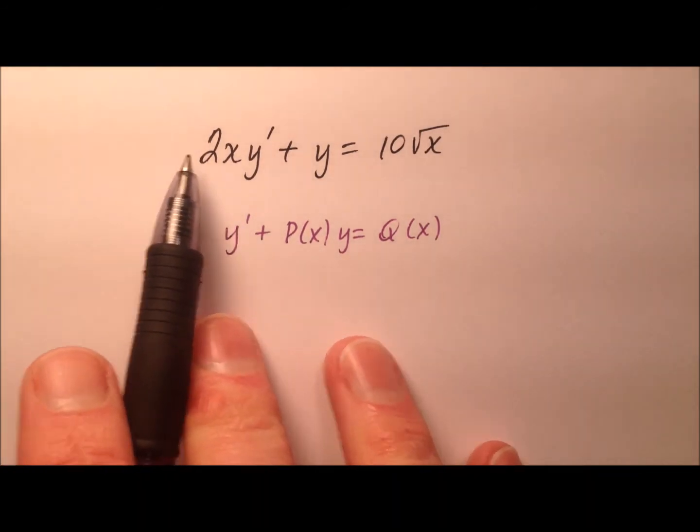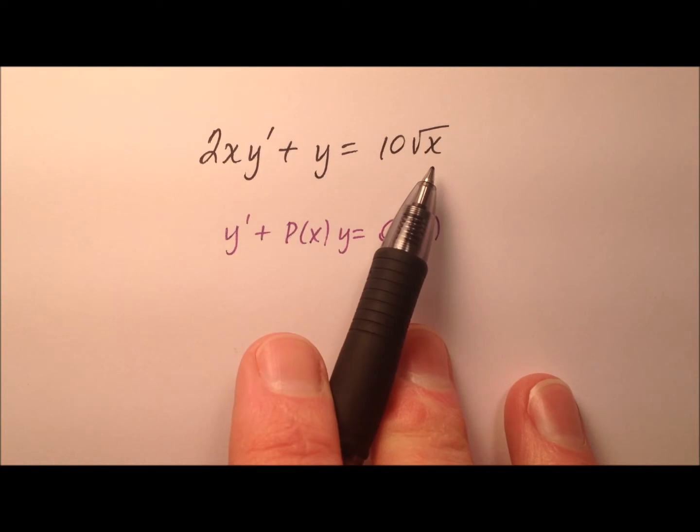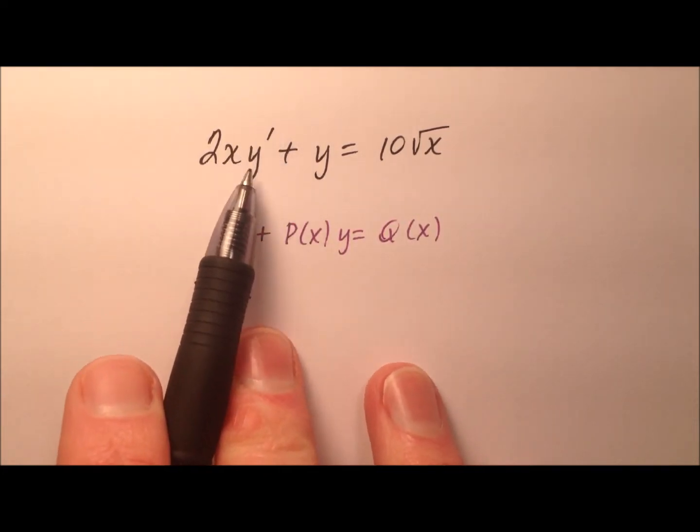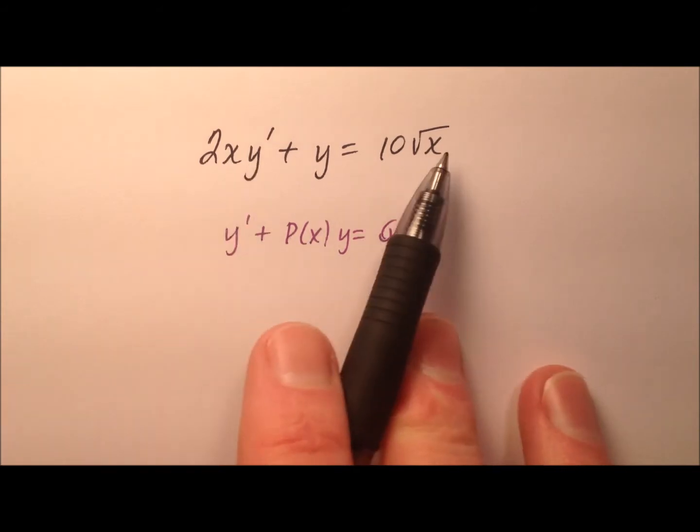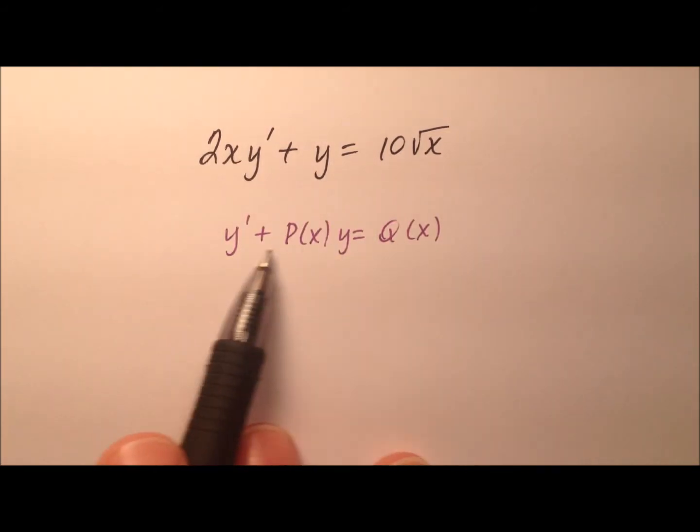In this example, we're going to go ahead and work through and solve this linear first order differential equation. And as a quick reminder, it's first order because the highest derivative we see is the first derivative, and it's linear because I can transform this equation into this form right here.